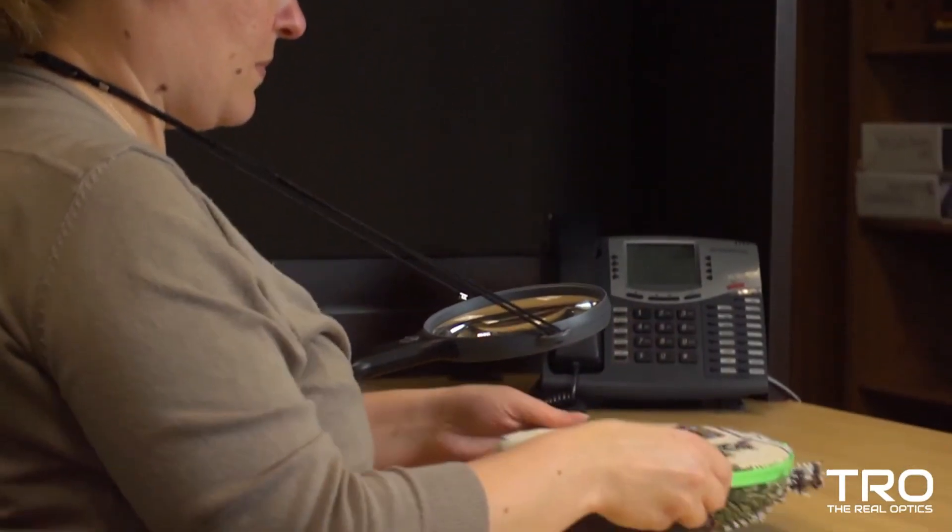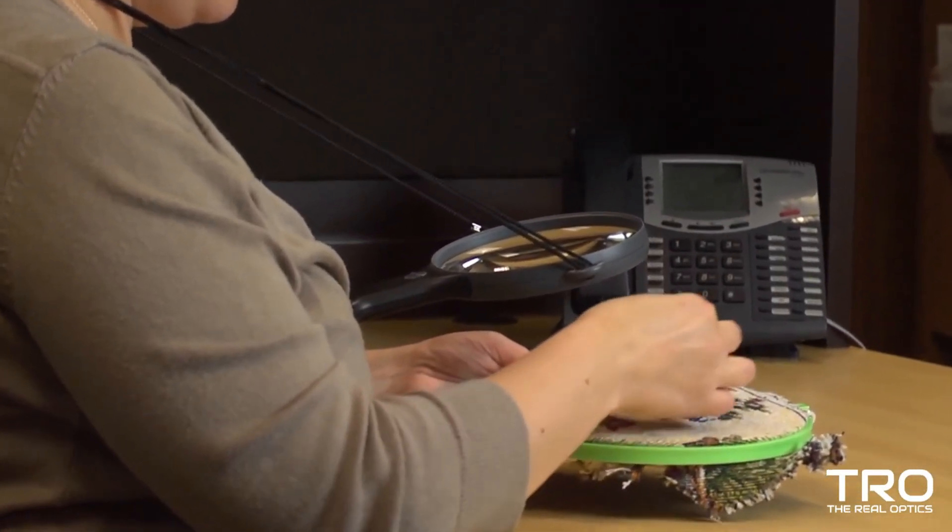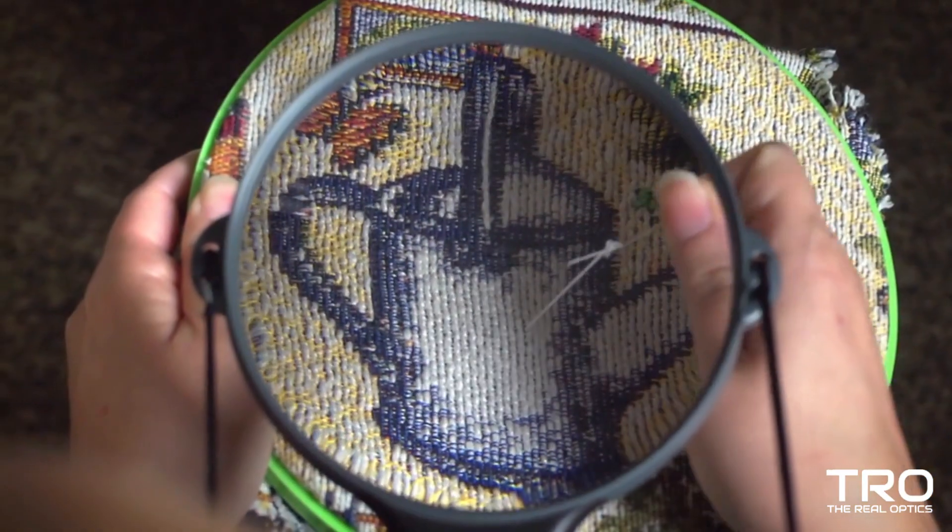This magnifier is designed to hang from your neck and can be adjusted to fit anyone. As you can see, the MagneShine comfortably rests against your body and frees up both of your hands.